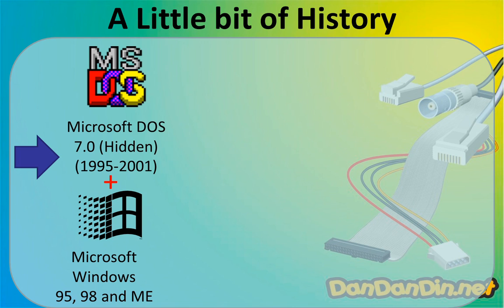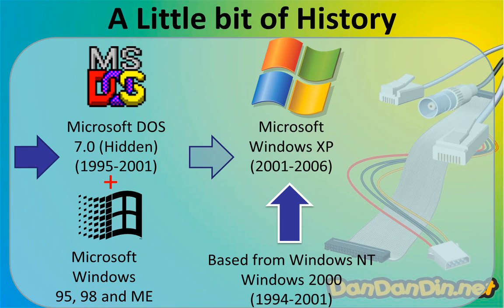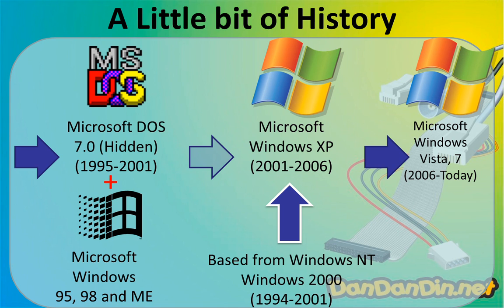So they decided to dump the previous code and take the code from Windows NT and Windows 2000. NT — we are not entirely sure what NT means, but we can suppose it stands for New Technology. And in fact it is a new technology that does not run on top of DOS — it is a standalone operating system. This led to Windows XP, Windows Vista, and Windows 7.